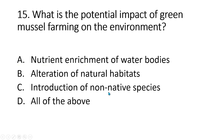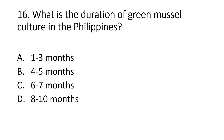Number 15. What is the potential impact of green mussel farming on the environment? A. Nutrient enrichment of water bodies. B. Alteration of natural habitats. C. Introduction of non-native species. D. All of the above. The answer is letter D, mussel farming can have several impacts on the environment. Number 16. What is the duration of green mussel culture in the Philippines? A. 1–3 months. B. 4–5 months. C. 6–7 months. D. 8–10 months. The answer is letter D, mussels can be harvested after 8–10 months.